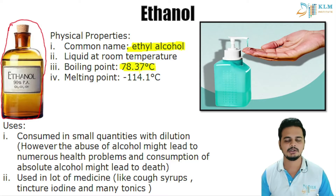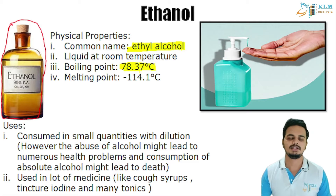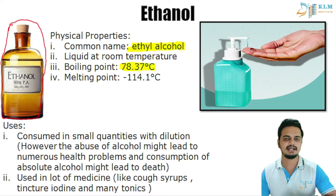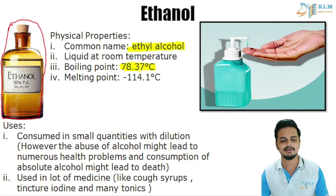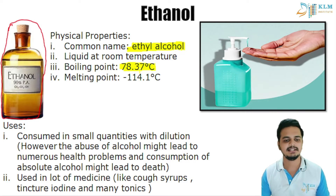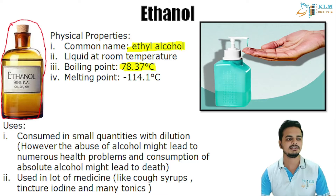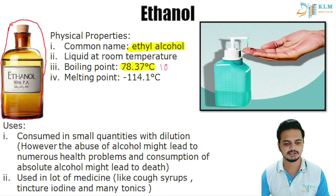The boiling point of ethanol is 78.37 degrees Celsius. This is important because ethanol evaporates very easily. Its boiling point is less than that of water, whose boiling point is 100 degrees Celsius.